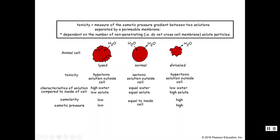The opposite can also happen: in a hypertonic solution, there are more solutes outside the cell than inside, so water moves out of the intracellular fluid and the cells shrivel up. You may hear the term crenation, which simply means shriveled. Cells don't work well when shriveled, so ideally we want to maintain an isotonic solution.